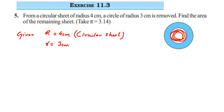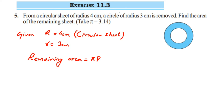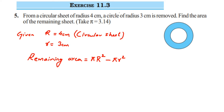Now we have to find the remaining (blue) area, so we subtract the two areas. The remaining area equals the area of the outer circle minus the area of the small circle. Area of the outer circle is π capital R squared. From that we subtract the area of the small circle, which is π small r squared. I've used capital R and small r to avoid confusion.